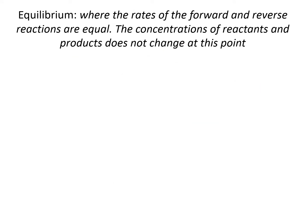Equilibrium is where the rates of forward and reverse reactions are equal. The concentrations of reactants and products does not change at this point. So at equilibrium, the forward reaction is happening at the same rate as the reverse reaction. Which means that every time one reactant molecule is used up, a reactant molecule is formed by the reverse reaction. That means that the concentration of reactants never changes and the concentration of products never changes at the point of equilibrium.